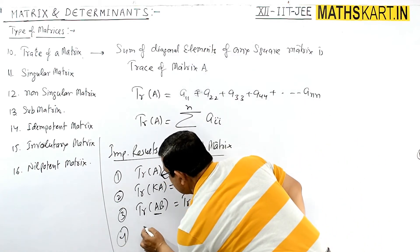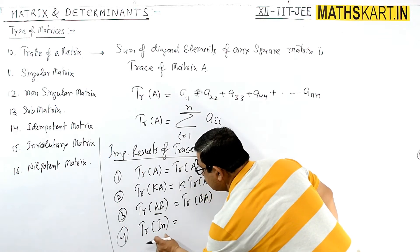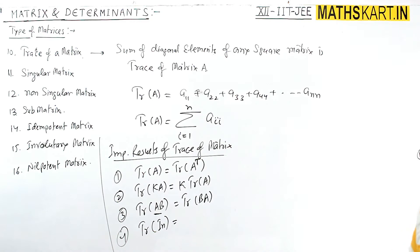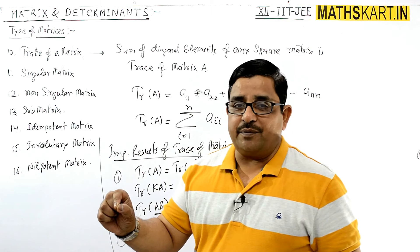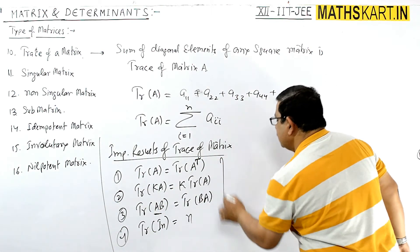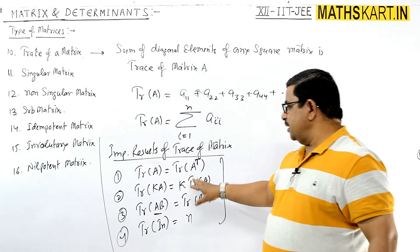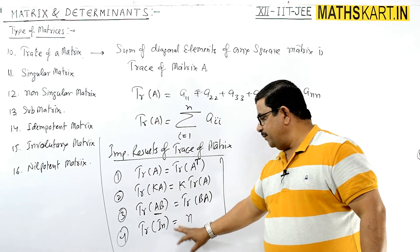Fourth one is trace of I_n, where I_n means identity matrix. Identity matrix's trace - trace means sum of the diagonal elements. If n order unit matrix, then their sum is n. So this equals n. These properties and results you should remember, and we'll cover transpose matrix and product of two matrices ahead.